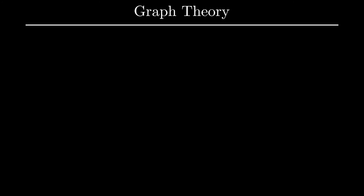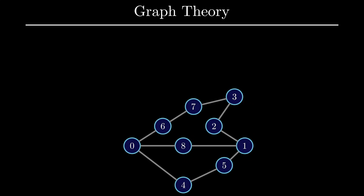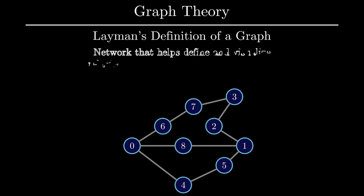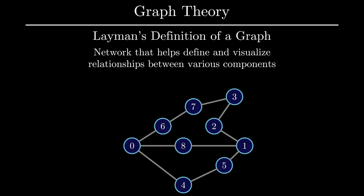In this video, I'll give you a brief intro into the vast and incredibly interesting field of graph theory from a computer science perspective. Here's an example of a type of graph that we're going to talk about extensively in this video. If you were to ask me what's the simplest definition of a graph for someone who knows nothing about the field, what I could tell you is that you can think of a graph as a network that helps define and visualize relationships between various components.